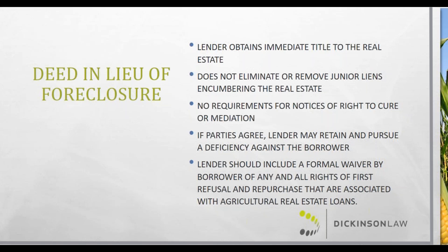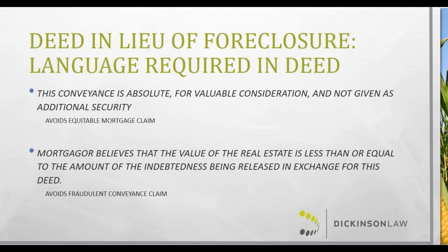There is specific language required in all deeds in lieu. In Iowa, where the mortgagor deeds property back to the lender, the general rule presumes that deed is a continuation of the security and the right of redemption continues. That presumption can be overcome if the deed explicitly states that the conveyance is absolute for valuable consideration and not given as additional security. Additionally, the deed should include a statement that the mortgagor believes the value of the real estate is less than or equal to the amount of the indebtedness being released — because if the mortgagee transfers equity in the property and then files for bankruptcy, the bankruptcy court may seek to avoid that transfer as a fraudulent conveyance.